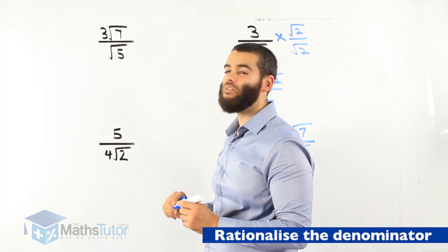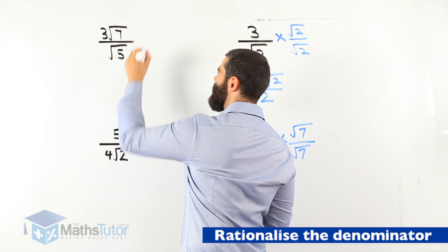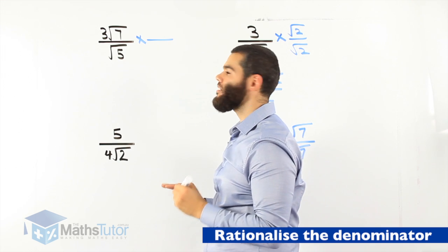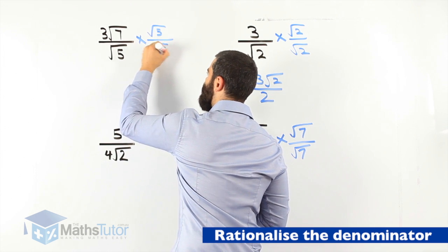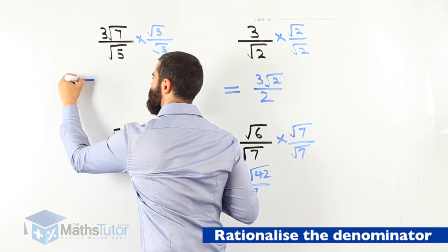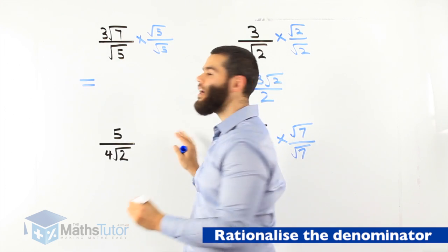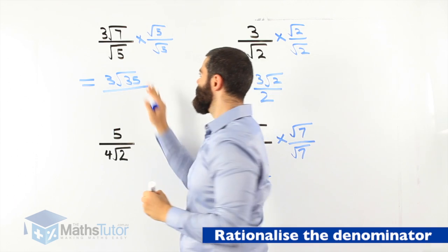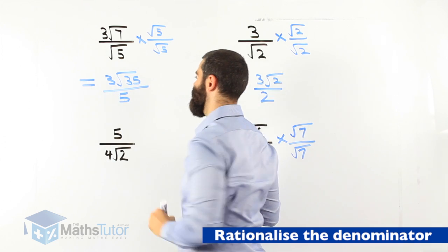Next: 3 root 7 over root 5. Again the denominator is irrational; we would like to make it rational. So we multiply by root 5 over root 5 — multiplying by the surd in the denominator. 3 root 7 times root 5 is 3 root 35, and root 5 times root 5 is just 5. That's our answer: 3 root 35 over 5.